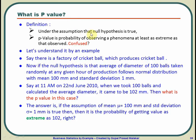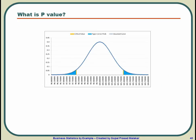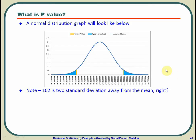If you take the definition, it means if you assume that the null hypothesis is true, then the probability of getting a value as extreme as 102 means the probability of getting value 102, or 102.1, or 102.2, and so on. So it means you are talking of the probability of getting 102 or more. So essentially, if you remember, in the case of normal distribution, we note that 102 is two standard deviations away.